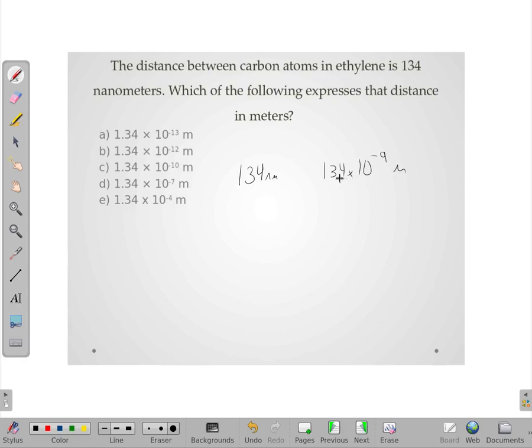Well, if we want to move that decimal two places back, that's going to make 1.34 times 10 to the negative 7th.